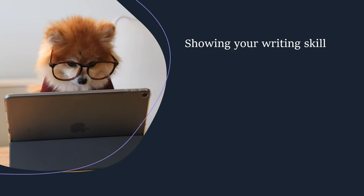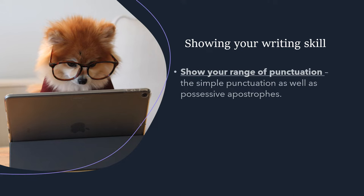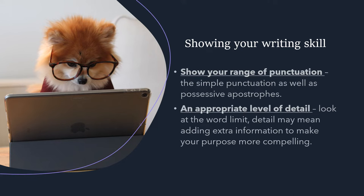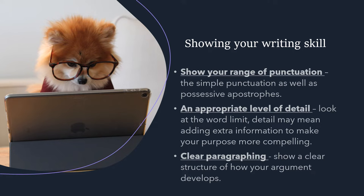To show your writing skills to the examiner, think about the following three elements: punctuation, an appropriate level of detail, and clear paragraphing. For punctuation, make sure you use full stops, commas, capital letters, question marks, exclamation marks, speech marks, and if necessary, possessive apostrophes. That shows a nice range of punctuation.